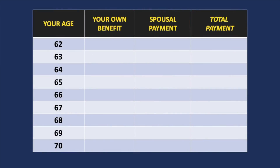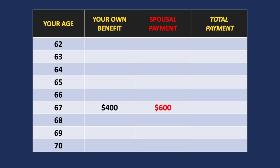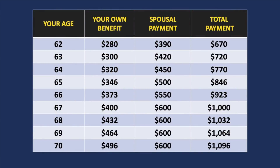Now that we know exactly how these benefits are reduced or increased based on filing age, let's go back to the example of the spouse who had their own primary insurance amount of $400 and a spousal payment of $600 for a total payment of $1,000. First, let's assume that the higher-earning spouse had already filed, which means the lower-earning spouse would be entitled to both their own benefit and the spousal payment. If the lower-earning spouse filed at 62, their own benefit would be reduced down to $280, which is 70% of the primary insurance amount. And the spousal payment would be reduced to $390, which is 65% of the spousal payment, for a total payment of $670.